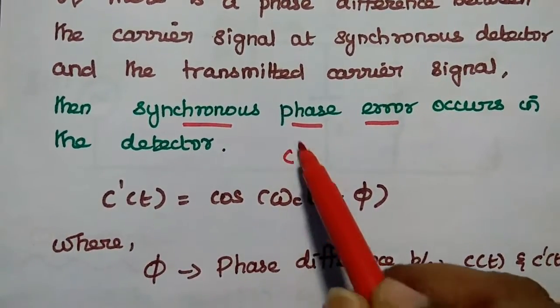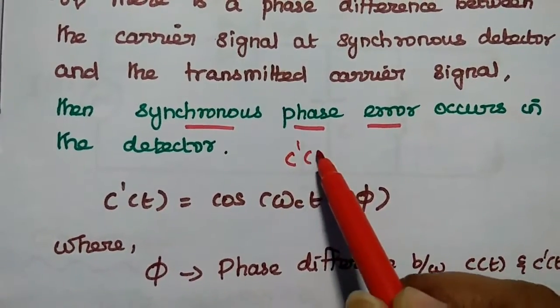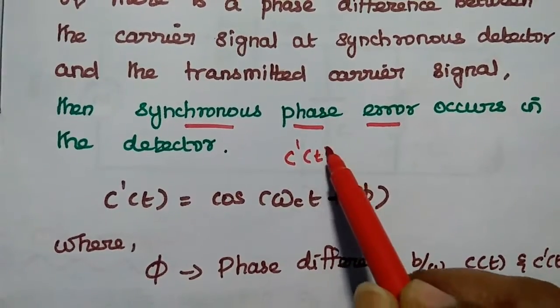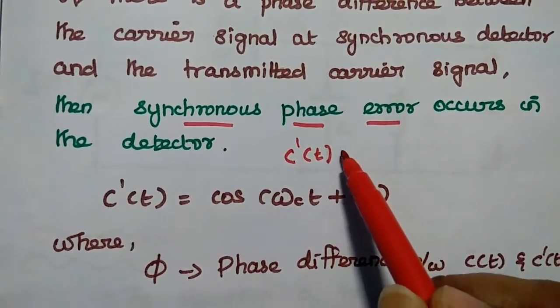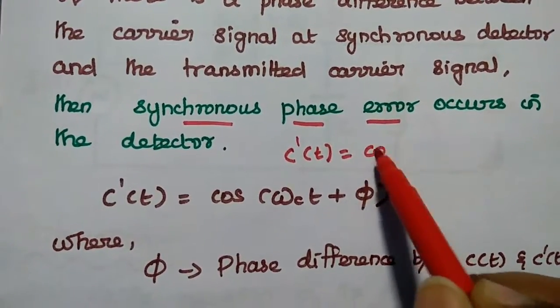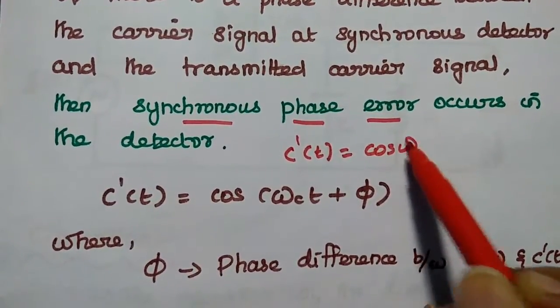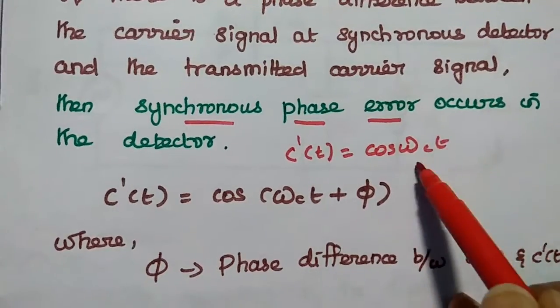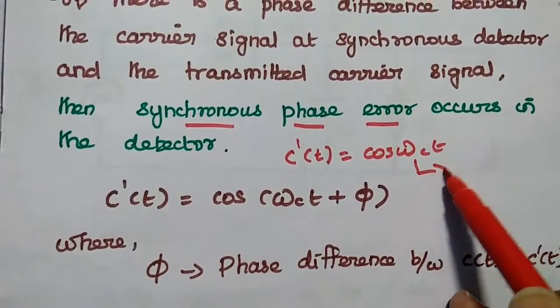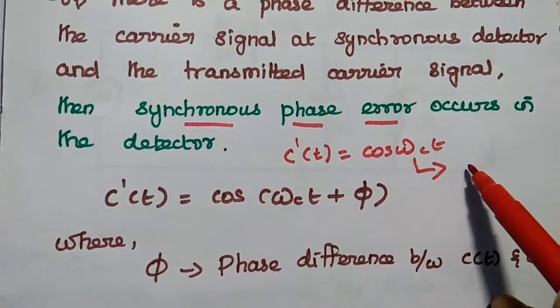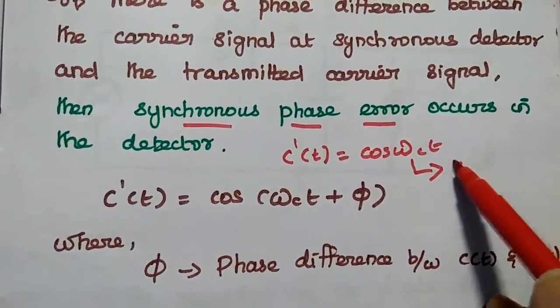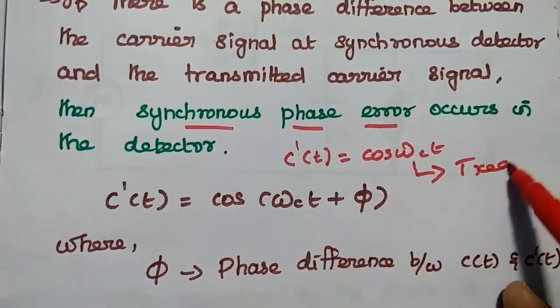In the previous derivation, we mentioned that the carrier signal generated locally at the detector is cos(ωC·t), which is exactly synchronized with the transmitter signal.